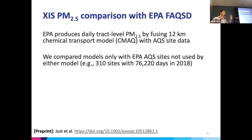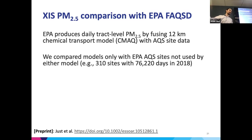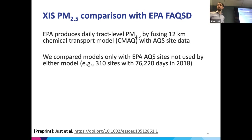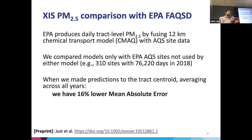We refit our model without using those stations at all so we wouldn't learn anything about the bias — a head-to-head validation. In 2018, the most recent time FAQSD was available, we looked at 310 sites across the country, many reporting every day. This model covers PM2.5, and then I'll show daily minimum, mean, and maximum air temperature.